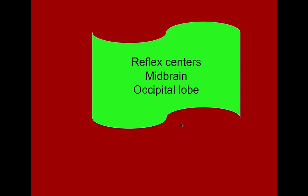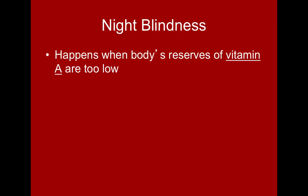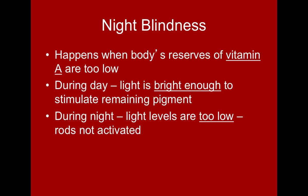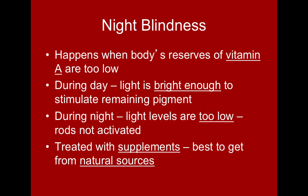Night blindness happens because of a decrease or depletion of our vitamin A reserve, since vitamin A is used to make the opsin protein. During the day, strong light stimulation can activate whatever pigment remains. But at night, when light levels are low, there's not enough stimulation to activate the rods, so we cannot see. Night blindness is typically treated with supplements, though it's best to get vitamin A from natural sources like spinach or carrots — which is why they say carrots give you good vision.